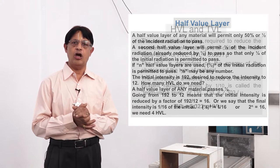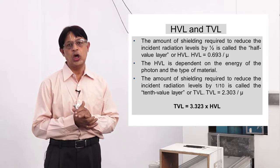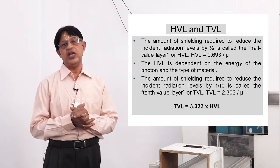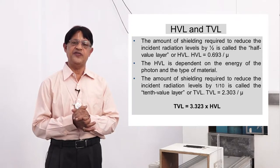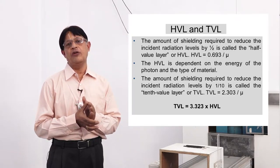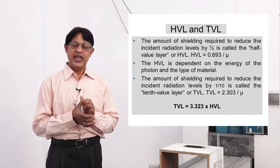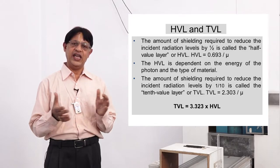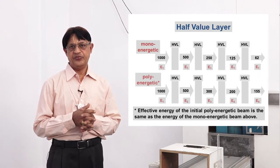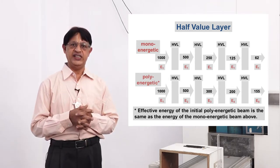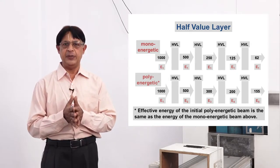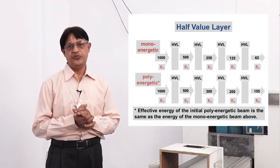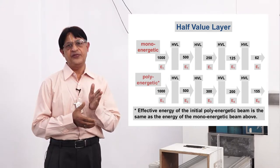By making use of a marginally different thickness, we will be able to reduce the original intensity by a factor of 10 — that is, reduce to 10 percent of the original intensity. We call that thickness the tenth value layer (TVL). So the TVL is that thickness of the chosen material which reduces the radiation field to 10 percent, or one-tenth, of its original value.